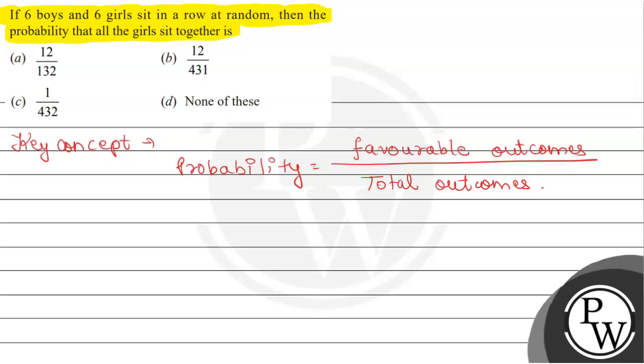Now, here is given 6 boys and 6 girls. The total is 6 plus 6, which equals 12.